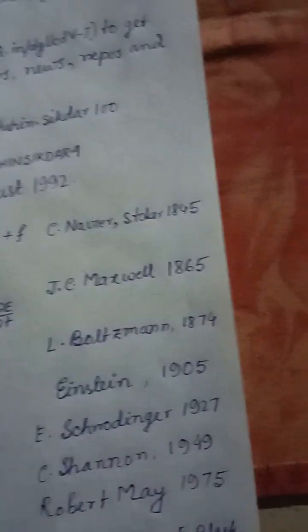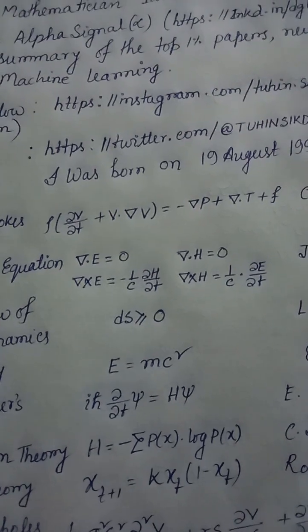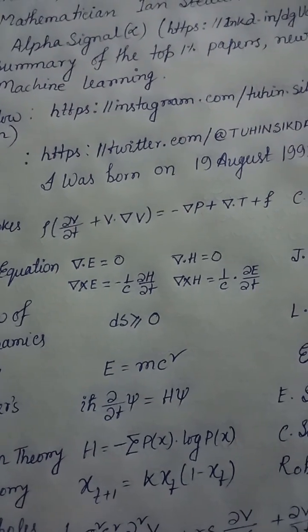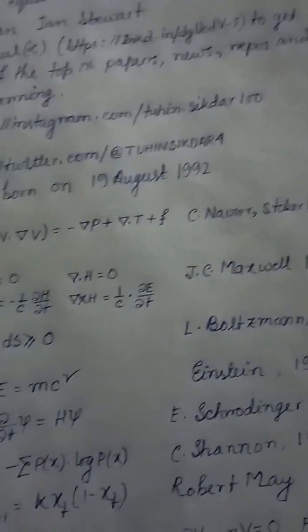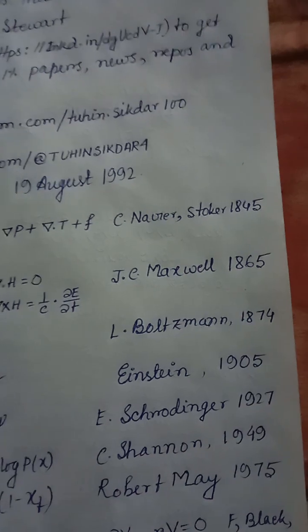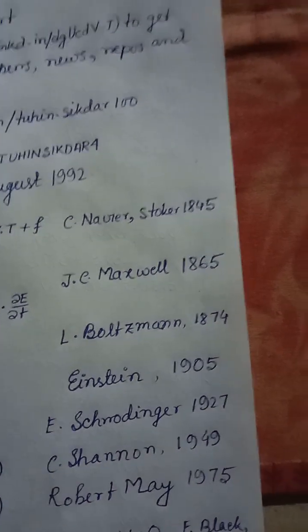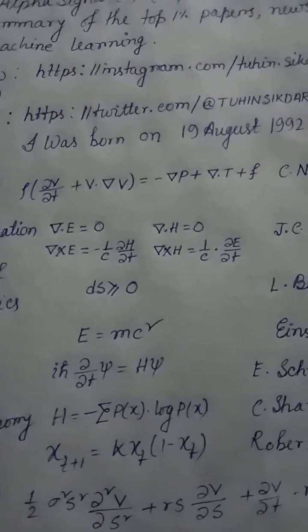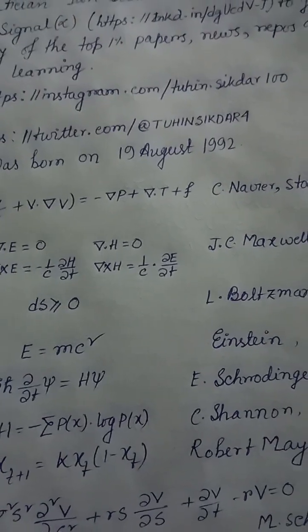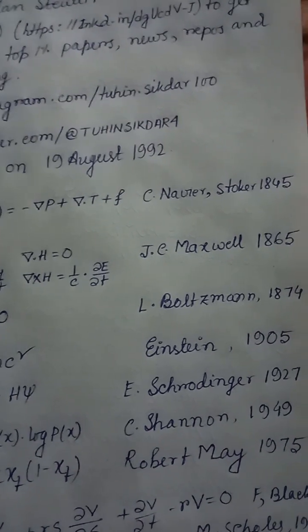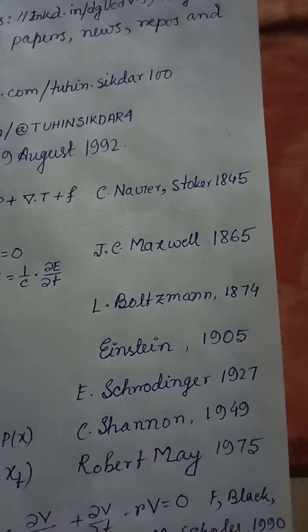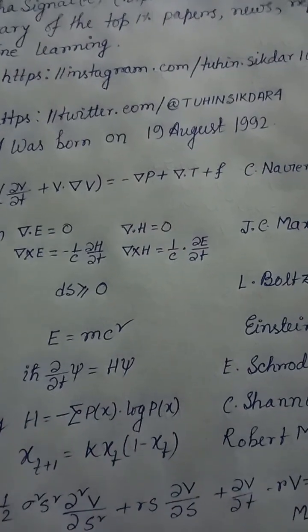Equation 15: Information theory — H = −Σ p(x)·log p(x), Shannon, 1949. Equation 16: Chaos theory — x(t+1) = k·x(t)·(1 − x(t)), Robert May, 1975.